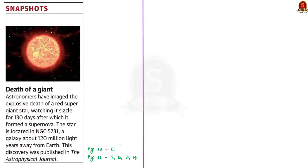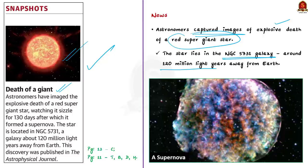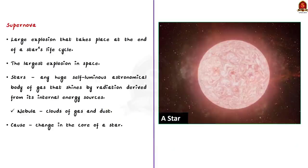Our next discussion is based on a snippet article about the death of a red supergiant star. Astronomers captured images of the explosive death of this red supergiant, which burned for 130 days and then exploded into a supernova. This star lies in the NGC 5731 galaxy, around 120 million light years away from Earth. A supernova is a large explosion that takes place at the end of a star's life cycle — it is the largest explosion that takes place in space.